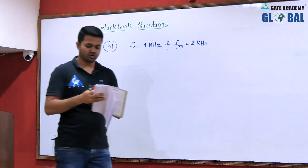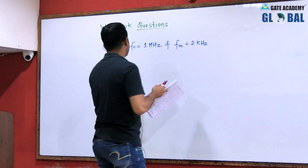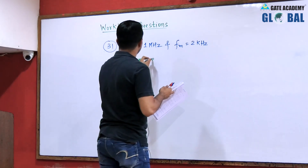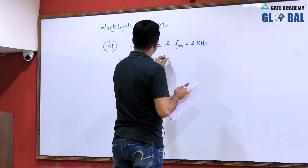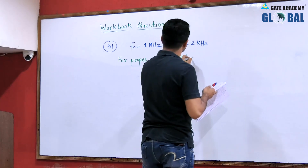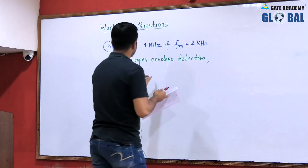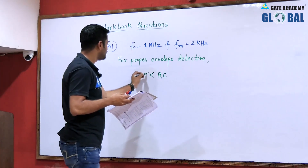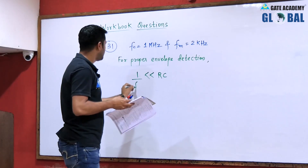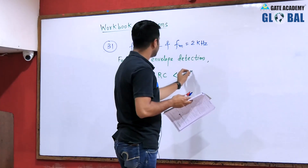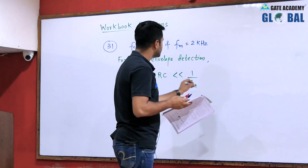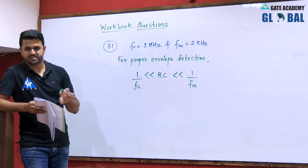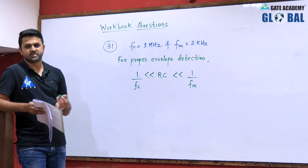The appropriate value of time constant we have to select. For proper envelope detection, the value of time constant RC should be very much greater than 1/fc and should be very much less than 1/fm. We have already discussed what happens when RC is less than 1/fc and when it is greater than 1/fm.